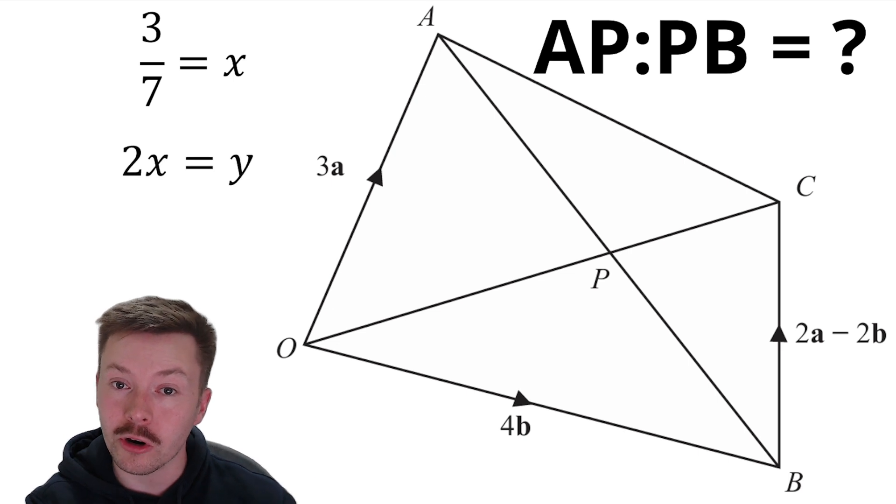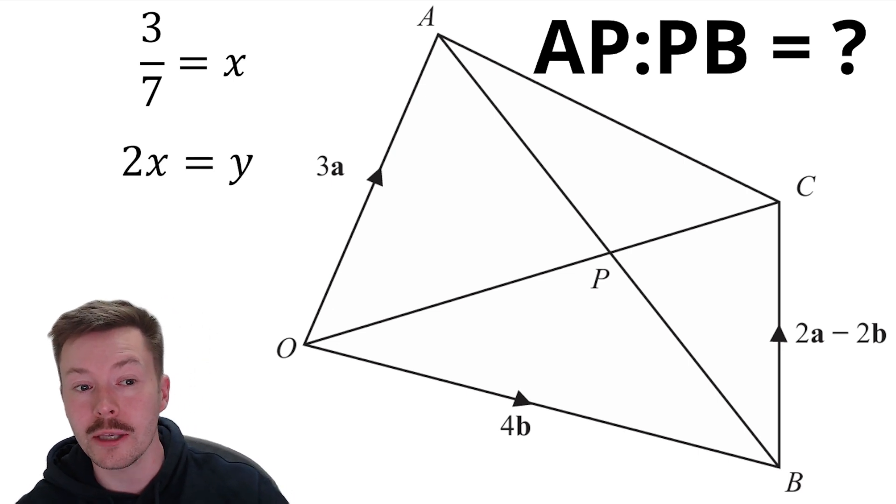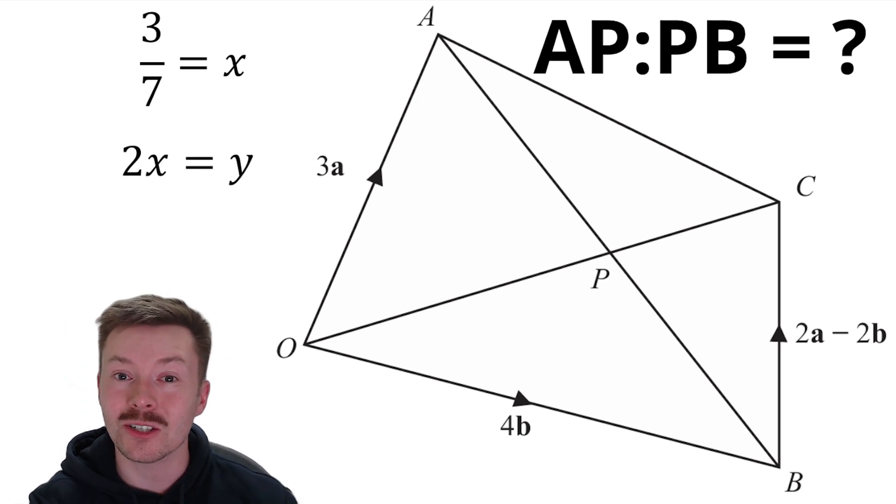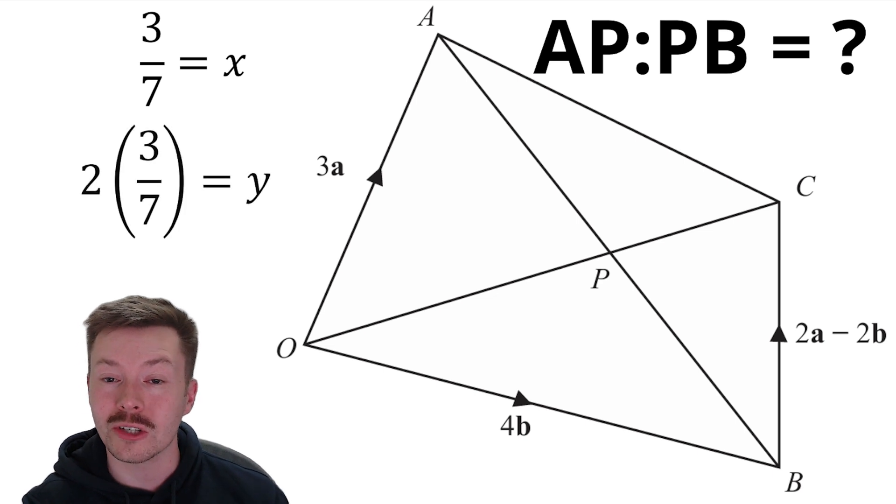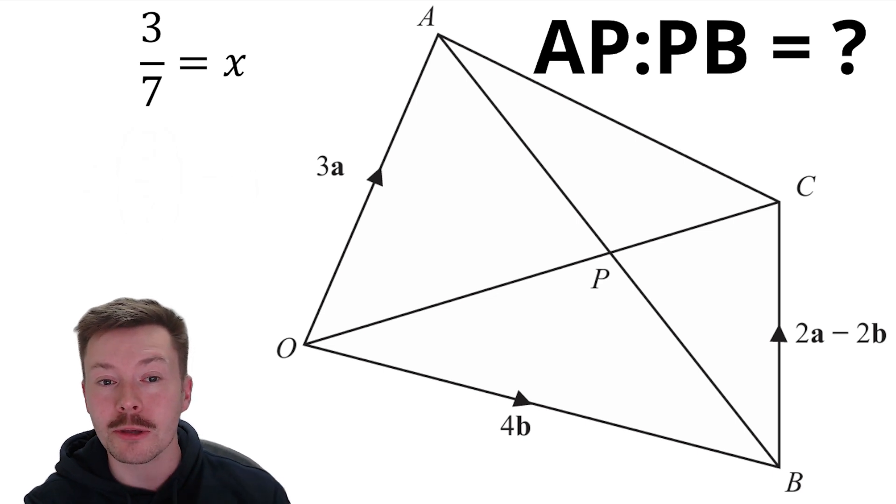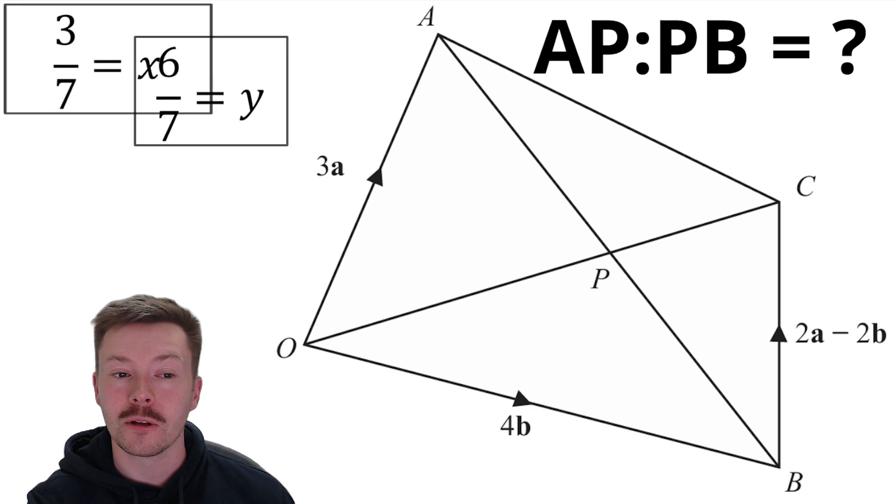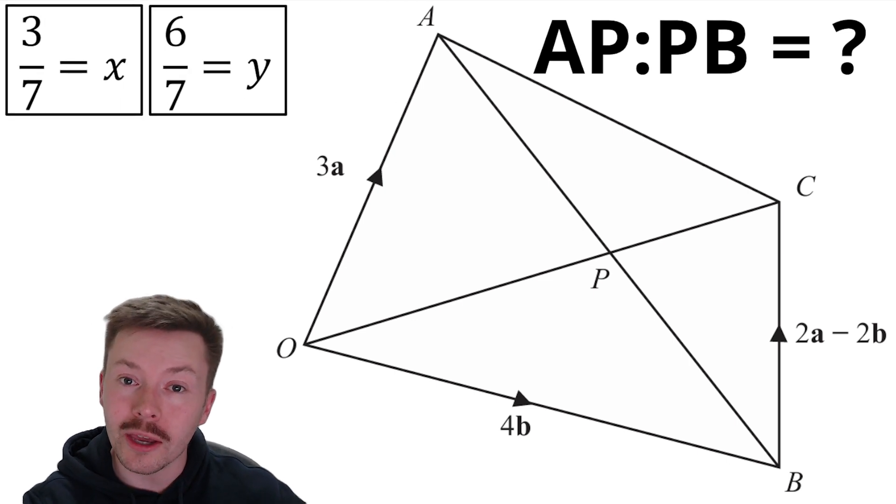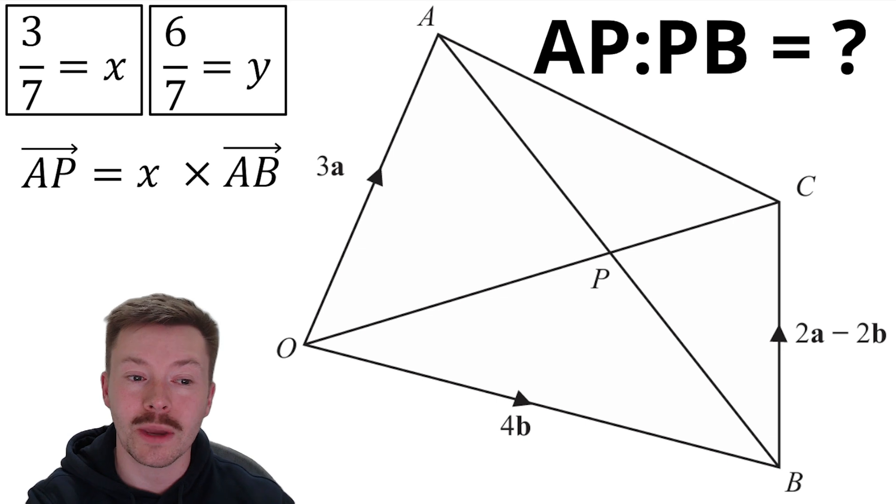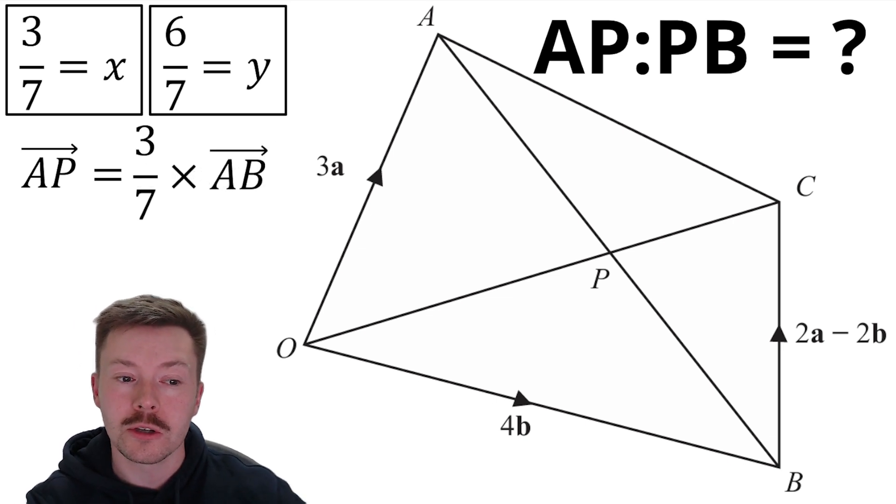Now, going back to the earlier equation of 2X equals Y. Substitute in for the X, so 2 lots of 3 over 7 is equal to Y. That means Y is equal to 6 over 7. And they are the two values which we can then go back to look at our original equations. Okay, so we had that AP is something X times AB. So X is 3 sevenths, and that means AP is 3 sevenths of the whole vector A to B.